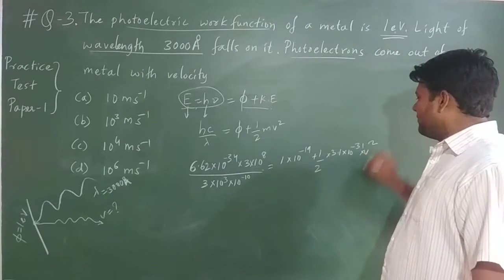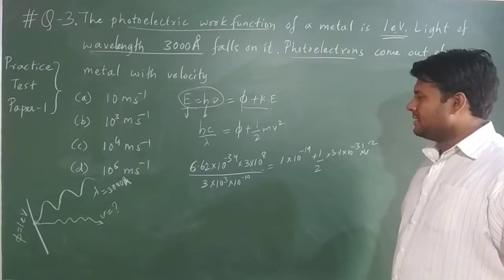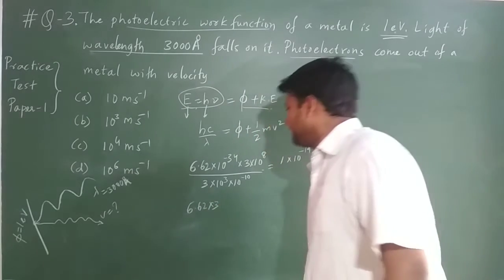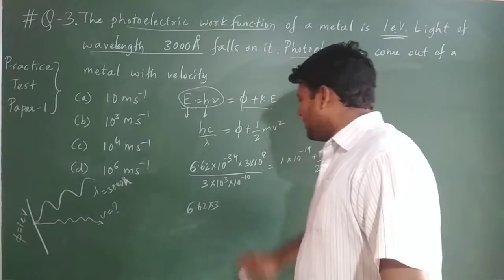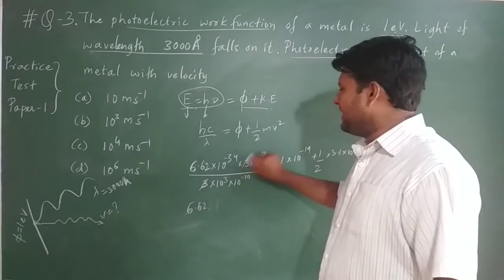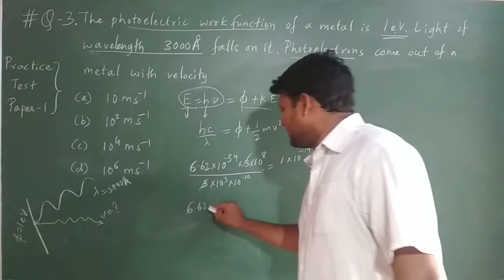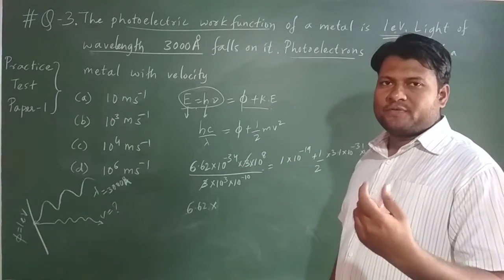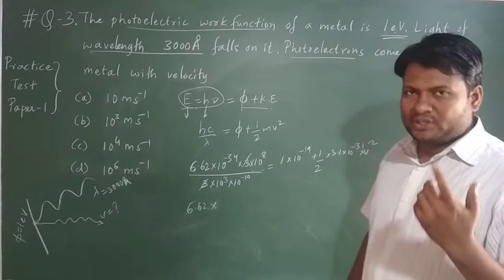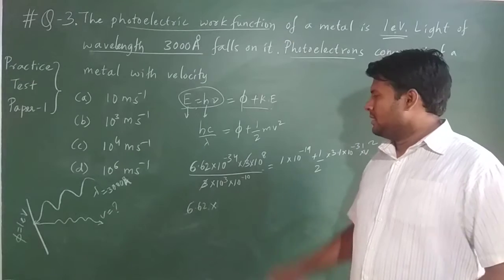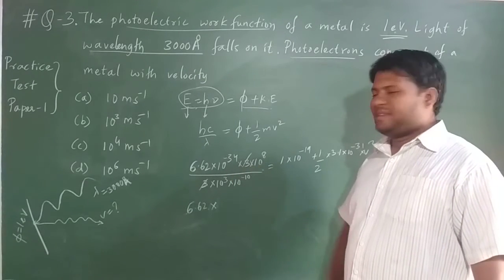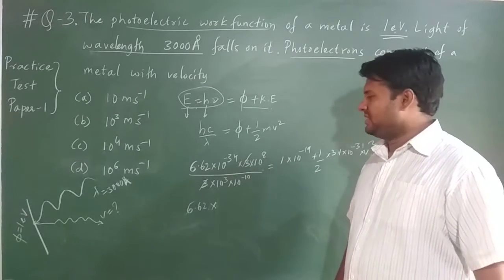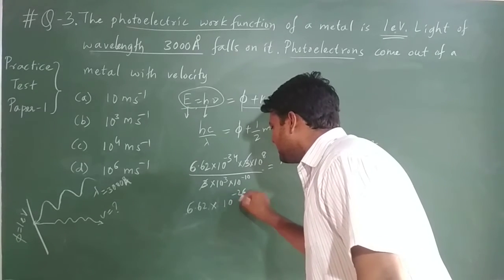v² is what we need to find out. Bifurcating the numbers: 6.62 × 10⁻²⁶⁺⁷ = 6.62 × 10⁻¹⁹. On the right-hand side we have 1 × 10⁻¹⁹ plus ½ × 3.1 × 10⁻³¹ × v². The power −26 + 7 becomes −19, giving 6.62 × 10⁻¹⁹.